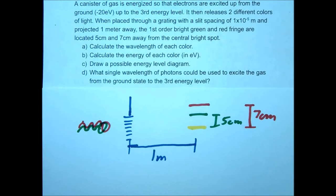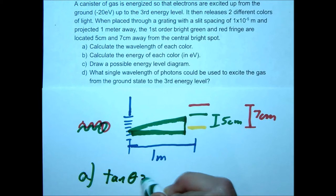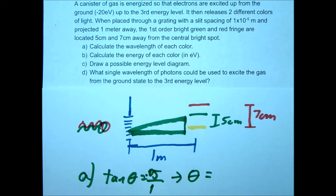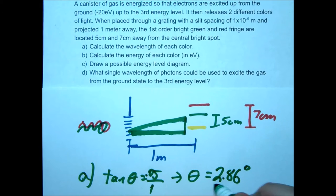I went ahead and drew this out for you. We're sending red and green through our diffraction grating, getting our interference pattern: 5 centimeters for green, 7 centimeters for red. Let's calculate the wavelength. Letter A is a review question from our previous unit. To figure this out, we want to find the angle first. Looking at our triangle, we use tan theta equals x over L. So 0.05 meters divided by 1 meter. Inverse tangent of 0.05 divided by 1 equals 2.86 degrees. Notice it's a small angle.